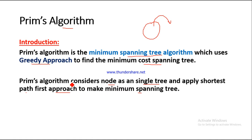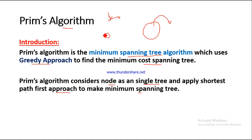In Prim's algorithm it considers a node as a single tree. In Kruskal's algorithm, edges are considered as a single tree and we take edges which have minimum cost. But here we can start from any node and get our minimum spanning tree. The key difference is: Kruskal's considers edges, but Prim's consideration is on the nodes.